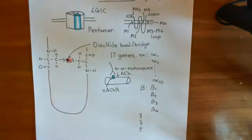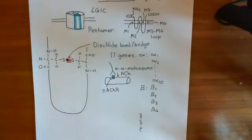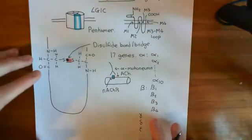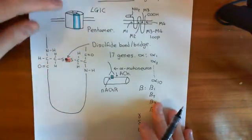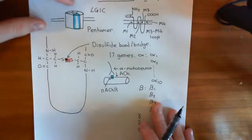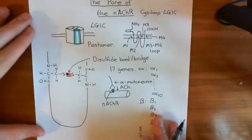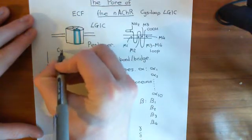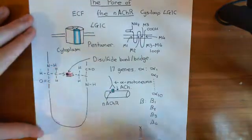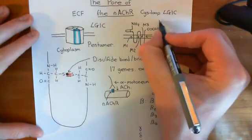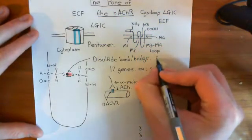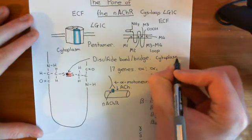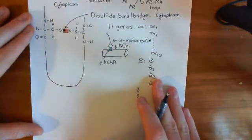Welcome back to this video in which we're talking about the pore of the nicotinic acetylcholine receptor. We're about to look at the subunit composition of the neuromuscular junction nicotinic acetylcholine receptor. Looking at a picture from above — from the extracellular fluid — this side is the extracellular compartment and this side is the cytoplasm.